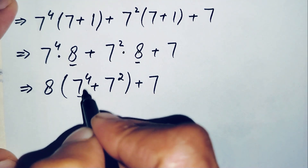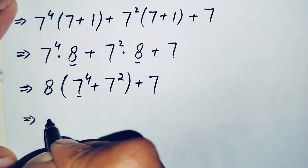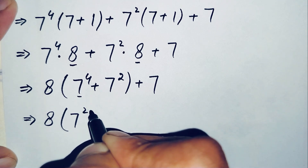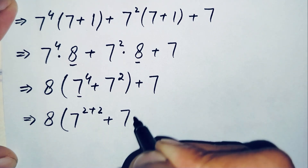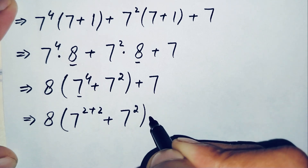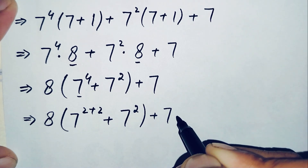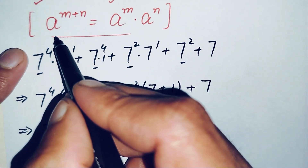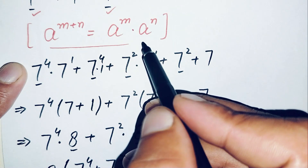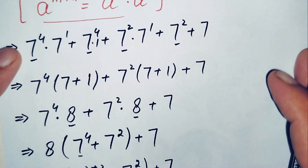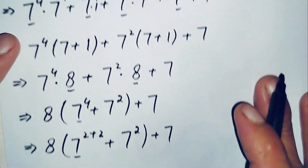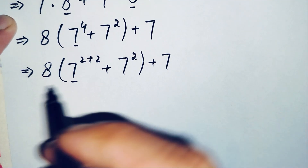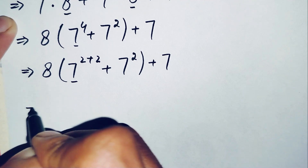Next, we do further changes on seven raised to power four by rewriting it as seven raised to power two plus two. We then apply the same exponential property, splitting it into seven raised to power two times seven raised to power two.